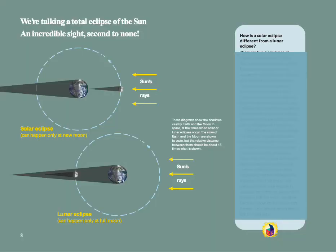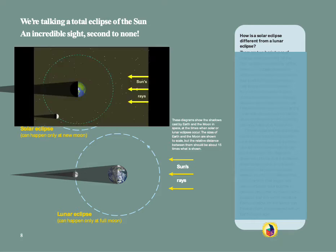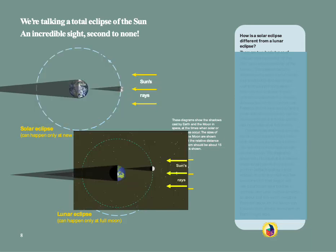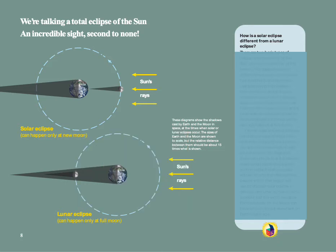Our main focus is on solar eclipses, but there are two basic types — solar and lunar — because both Earth and the Moon cast shadows behind them. This first animation shows the Moon going around Earth with sunlight coming from the right. Notice that the Moon's shadow touches Earth to create a solar eclipse only when the Moon is between Earth and the Sun — in other words, a solar eclipse can happen only at New Moon. This next animation shows that a lunar eclipse, in which Earth's shadow covers the Moon, can happen only when the Moon is opposite the Sun in our sky — in other words, a lunar eclipse can happen only at Full Moon.